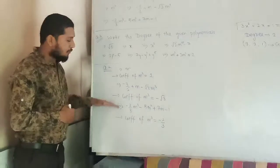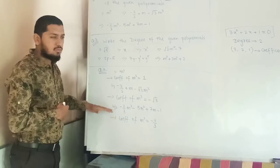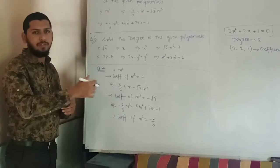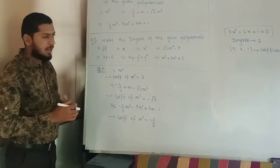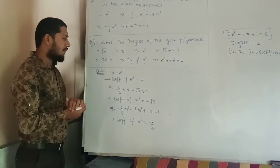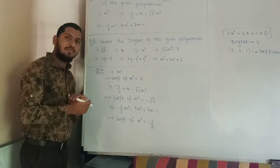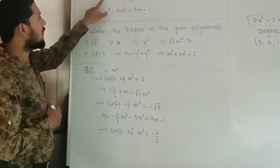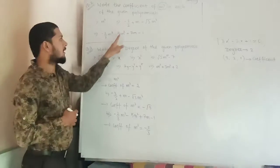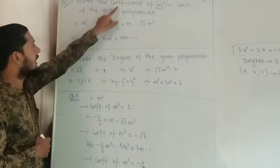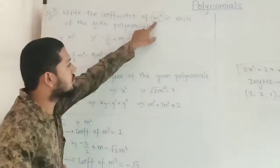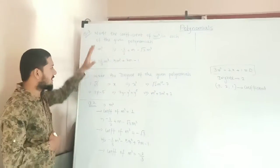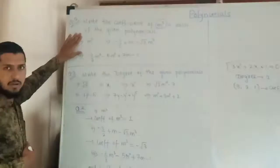Have you understood this? The coefficient is nothing but the multiple of that variable. If they ask you to find the coefficient of a specific term, you look at the number multiplying that variable. In this question they asked for the coefficient of n cubed, and that completes this example.